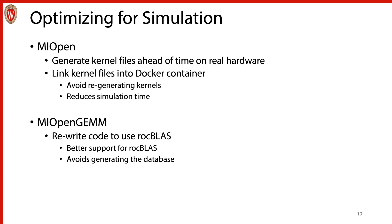So how do we optimize these libraries for simulation? With MIOpen, we found that we can generate the kernel files ahead of time using real hardware. We also created a patch that allows us to generate the proper kernel files even if we're using a different type of hardware from what we're simulating. We then link in these kernel files to the Docker container when running our program, completely avoiding the kernel generation step. For MIOpenGEMM, newer versions of MIOpen can use rocBLAS, which generates the database of potential solutions when it is installed — as opposed to on the fly like MIOpenGEMM does. Essentially, we've taken work that was being done in the simulator and done it ahead of time.